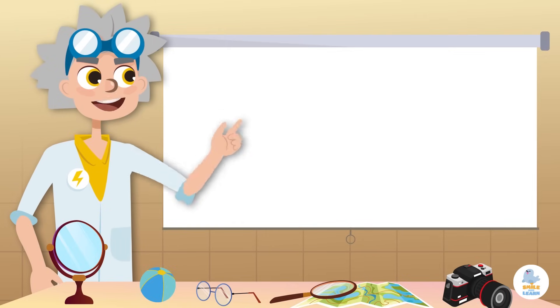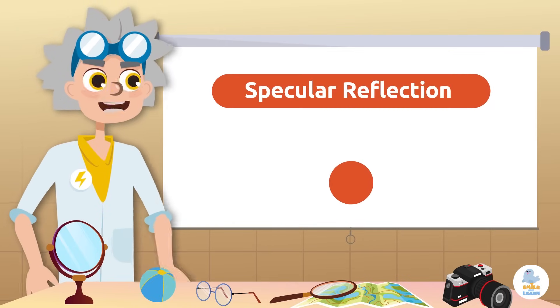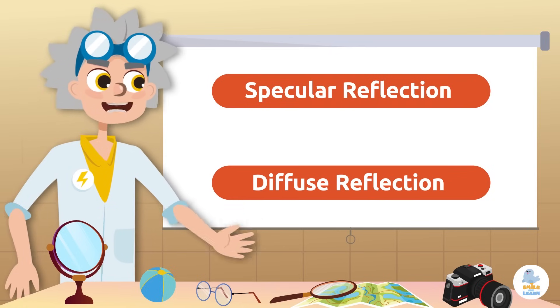We can differentiate between two types of reflection, specular and diffused reflection.